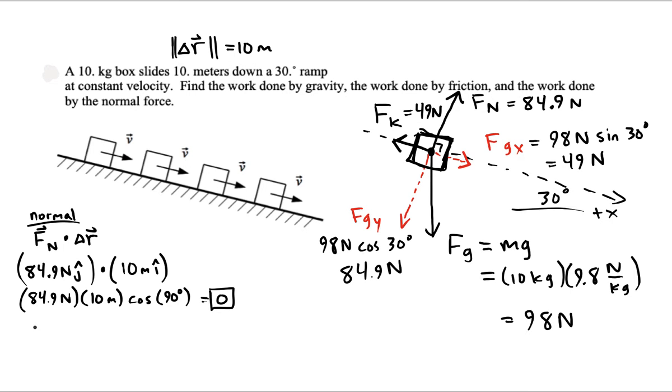Let's see how much work the force of gravity does. So you want your Fg dotted with Δr. So one option is to find the angle between them too. It would be 60 because we've got like a 30-60-90 triangle going on.